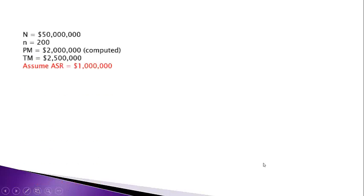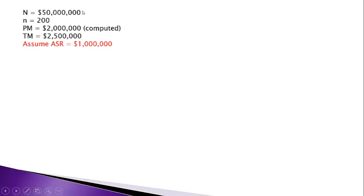Now let's take a look at the parameters. The population of AR is $50 million. We took a sample of 200. Based on extrapolation of the sample results to the entire population, we computed the projected misstatement to be $2 million. Prior to the sample, we determined that the tolerable misstatement is $2.5 million. We're also adding an assumption that the allowance for sampling risk is $1 million.